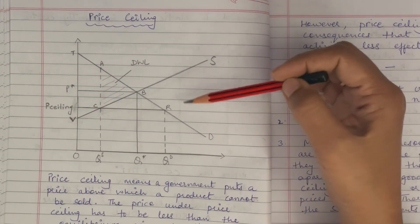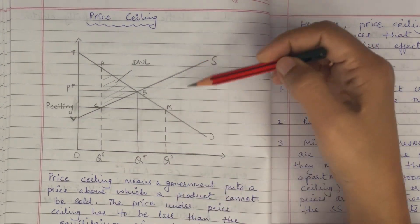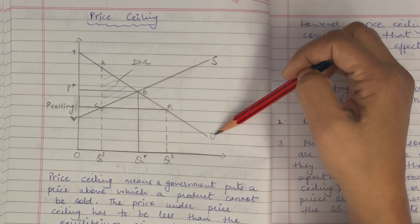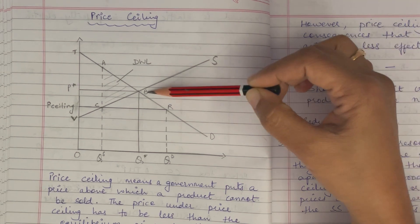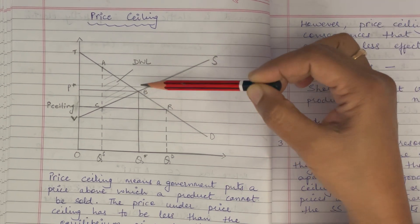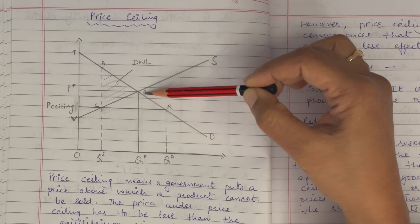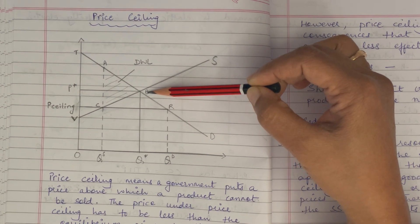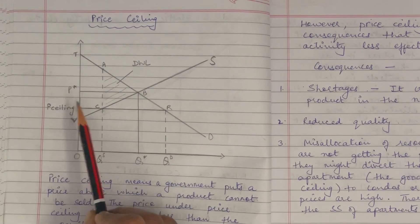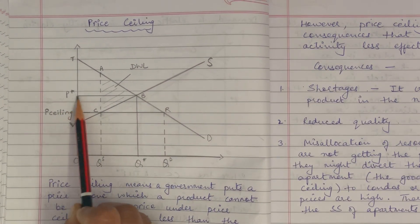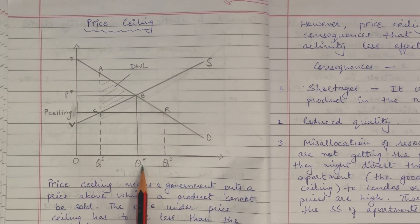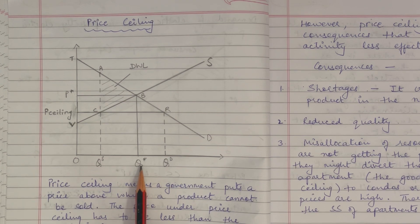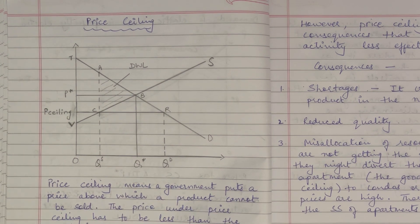Coming to this diagram now — TD is my demand curve, VS is my supply curve. The intersection of them is my equilibrium point, which is point B, and that gives me P* as my equilibrium price and Q* as my equilibrium quantity.